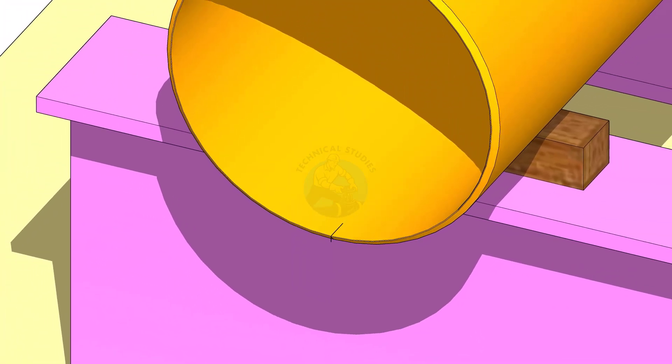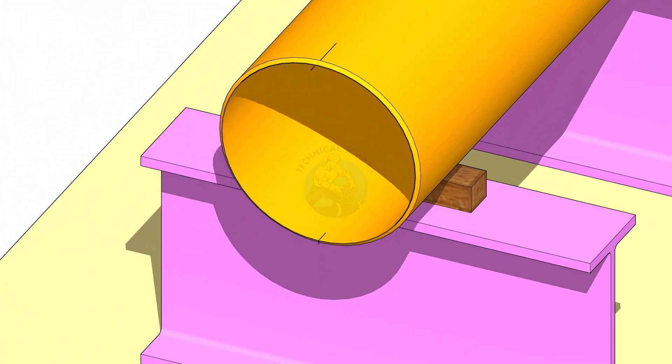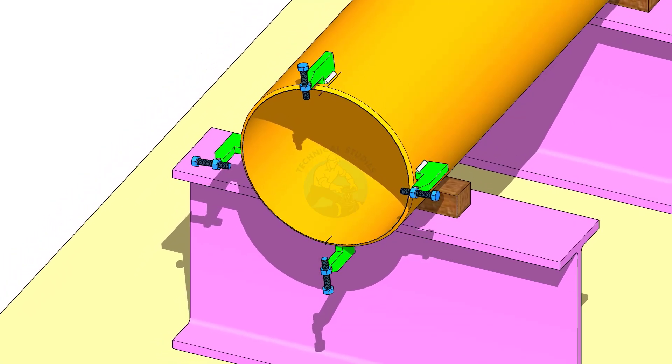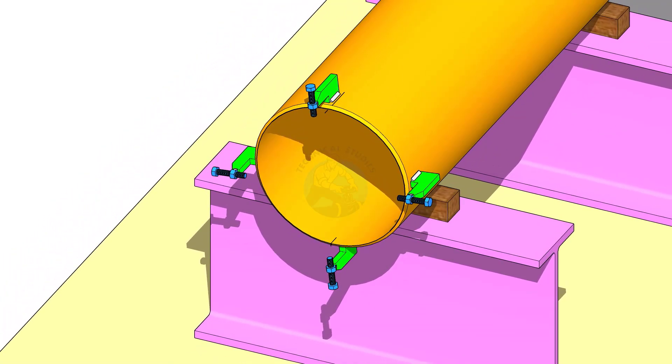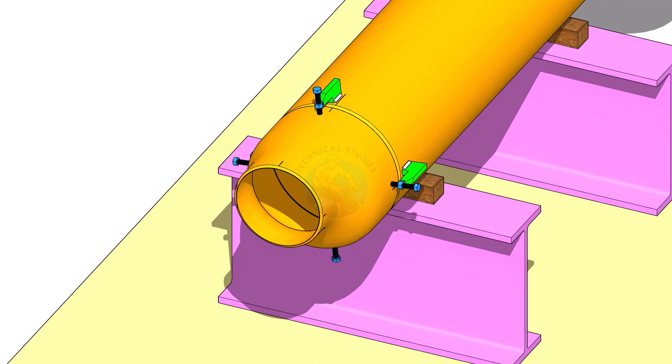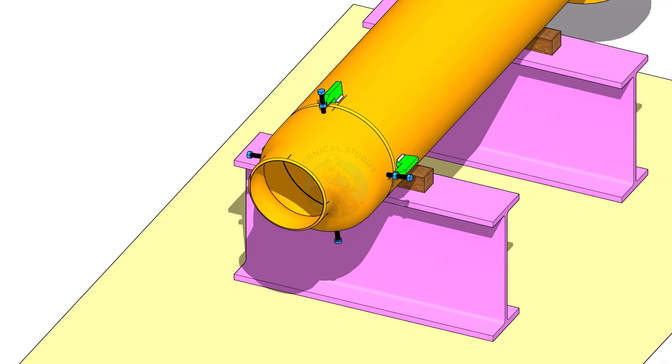Mark the quarter circumference on both sides of the pipe. If you don't have a pipe aligning clamp, tack weld four jack bolts 90 degrees apart, as shown.